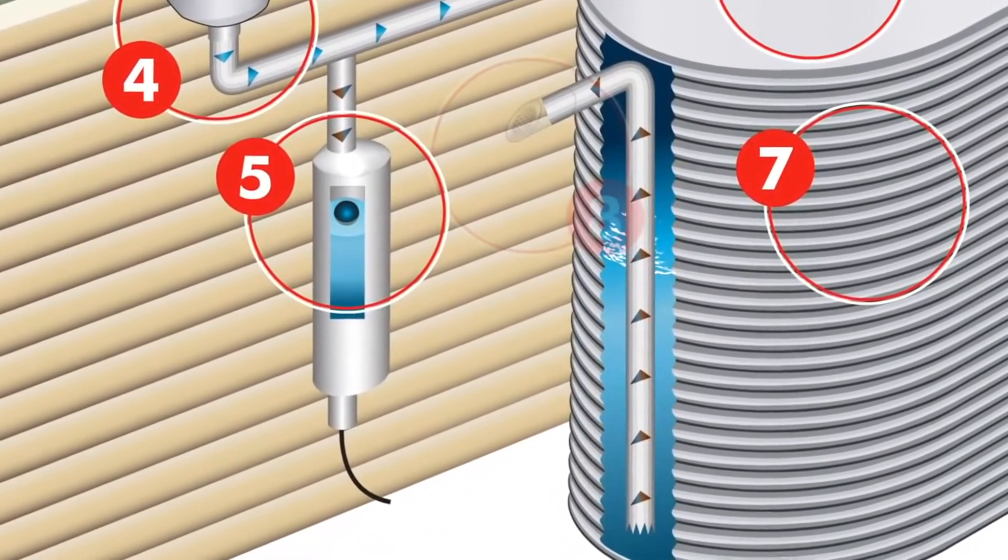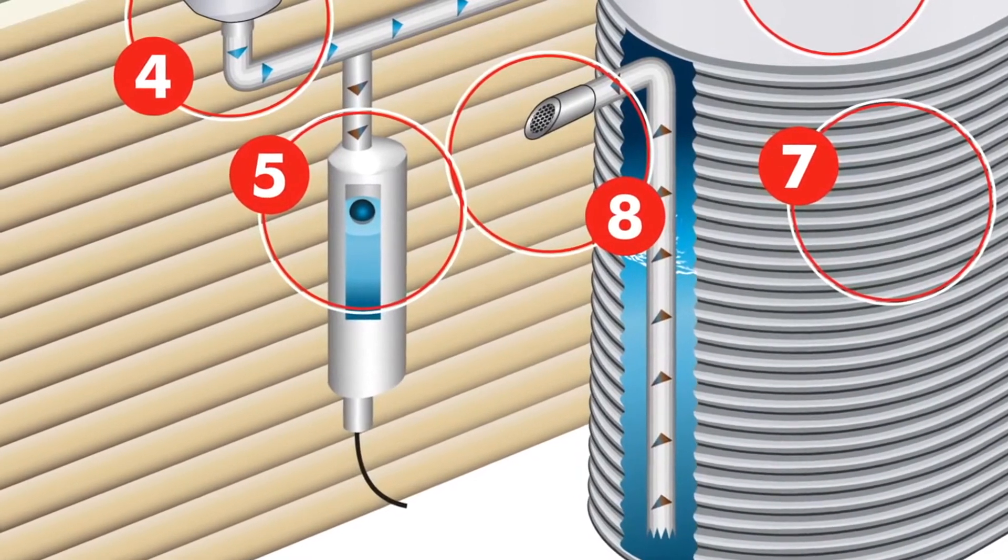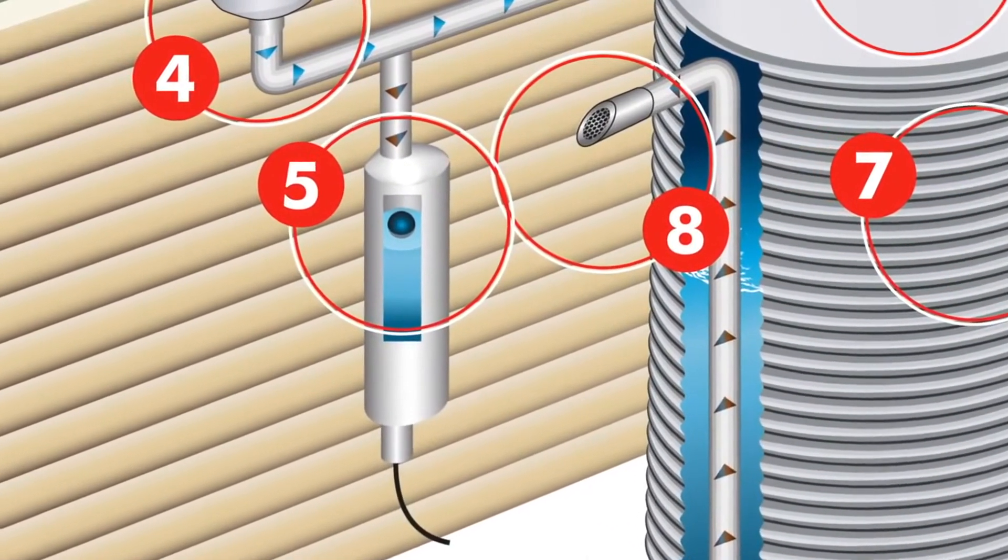Attach insect proof screens or flap valves to the end of all pipes to keep mosquitoes and pests out and ensure the tank is vented properly.